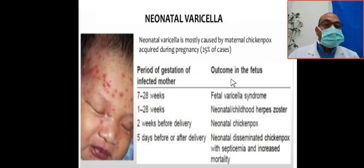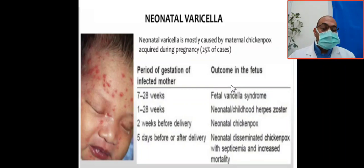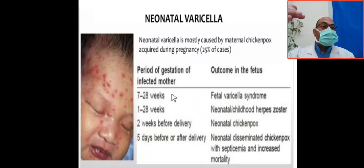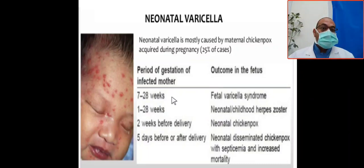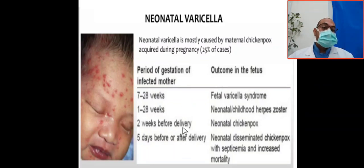Varicella zoster infections caused by maternal chickenpox affect about 25% of cases acquired during pregnancy. The outcome depends on the period of gestation: if it occurs from seven weeks to 28 weeks, it is called fetal varicella syndrome. If it happens two weeks before delivery, it is called neonatal chickenpox. If it occurs five days before or after delivery, it is called neonatal disseminated chickenpox.